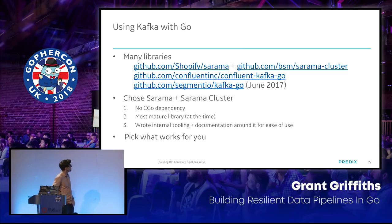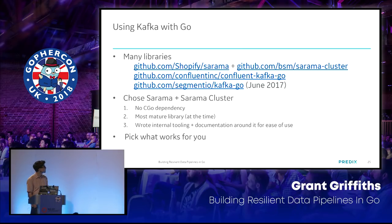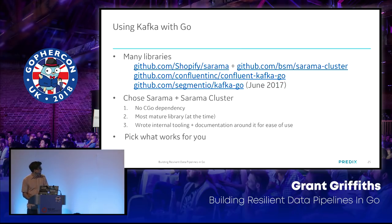Using Kafka with Go isn't so straightforward — there are a lot of different libraries to choose from. We chose Sarama and Sarama Cluster because in 2015 it was the most mature library. We've built a lot of internal tooling and documentation around it. We also chose it because there's no CGo dependency — the Kafka-Go library is a CGo library, and we prefer to use all native Go tooling. There's also a newer library from Segment.io called kafka-go, started in June 2017, which looks promising.